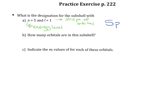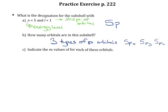Part B asks how many orbitals are in this sub-shell. Well, there are three different types of p orbitals: the 5px, the 5py, and the 5pz. Those x, y, and z designations just tell us their orientation in space — whether they're oriented on the x-axis, the y-axis, or the z-axis. Remember that our p orbitals look like peanuts; they've got two lobes. So that's your x, that's your y, and then your z would be coming in and out of the page.